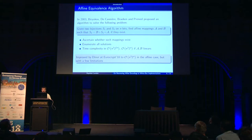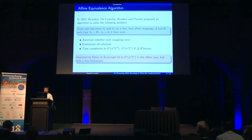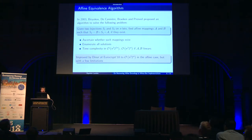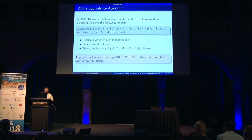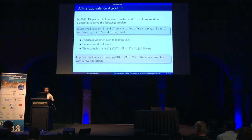If you think about this problem in a very generic way, it was actually solved in 2003. You can see it as follows: you have two bijections S1 and S2, and you want to find affine mappings A and B such that S2 = B ∘ S1 ∘ A, if they exist. This algorithm works very well, but the complexity is essentially exponential in the size of the function — even with the improvement by Dinur last year. If you apply this to block ciphers, it's exponential in the block size, so even for 64 bits it's way too large to break in practice.